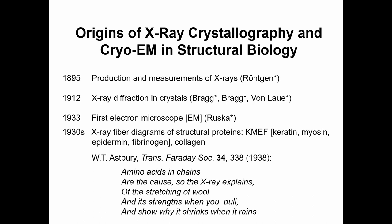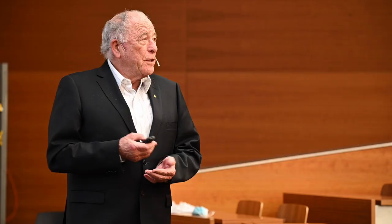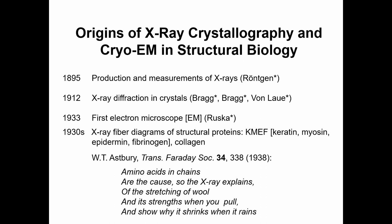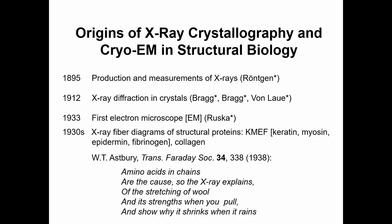Methods development has been a very important part of overall research in chemistry and the life sciences. In 1912, Bragg and von Laue independently discovered that X-rays are diffracted in crystals. Bragg and Bragg are father and son — the only father-and-son combination jointly awarded a Nobel Prize for the same project. In 1933, the first electron microscope was built in Germany by Ruska.